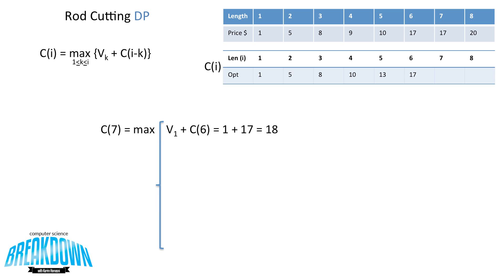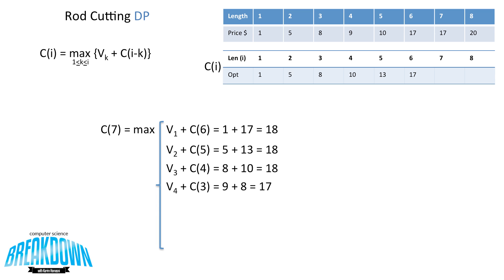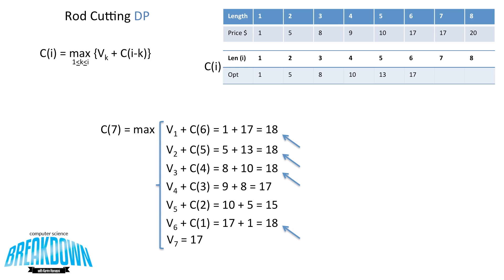Now let's try c(7), where k ranges from 1 to 7. v(1) + c(6) = 1 + 17 = 18. v(2) + c(5) = 5 + 13 = 18. v(3) + c(4) = 8 + 10 = 18. For k = 4: v(4) + c(3) = 9 + 8 = 17. For k = 5: v(5) + c(2) = 10 + 5 = 15. For k = 6: v(6) + c(1) = 17 + 1 = 18. And v(7) with no cut equals 17. We have four solutions giving a value of 18, so we store 18 in the array.